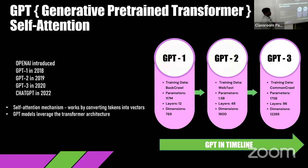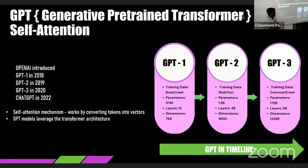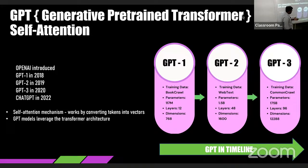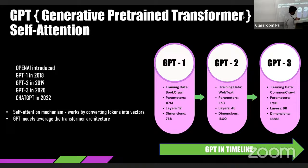GPT was introduced by OpenAI. The first GPT was introduced in 2018, GPT-2 was introduced in 2019, and GPT-3 in 2022. This is the timeline of ChatGPT from version one to three. As you can see, it has evolved a lot — from 117 million parameters, to 1.5 billion parameters, to 175 billion parameters. The dimensions have changed accordingly, and ChatGPT-3 is now using the 3.5 transformer architecture.